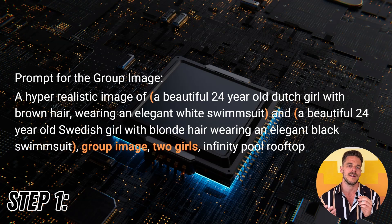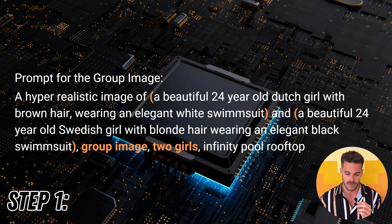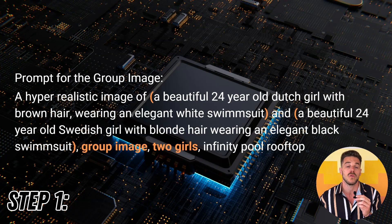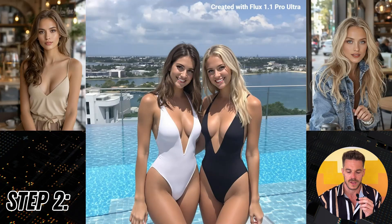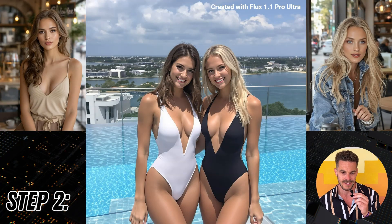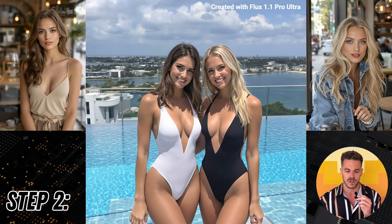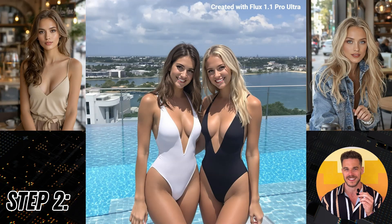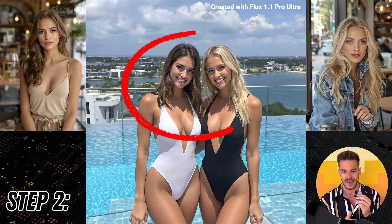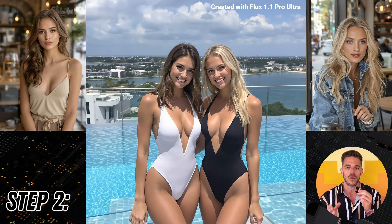With that prompt, we go over to the AI image tool we also use to create images of our normal AI influencers. For this particular example, I used Flux 1.1 Pro Ultra via Replicate, but you can use any other AI image tool as well. In step two, I created the group shot with Flux. It looks quite nice — we have the background, the girls are positioned exactly as defined in the prompt. However, as we can see, they are not looking exactly like our example AI influencers, and this is exactly where the challenge begins: we have to do a face swap and make sure the right model gets the right face.